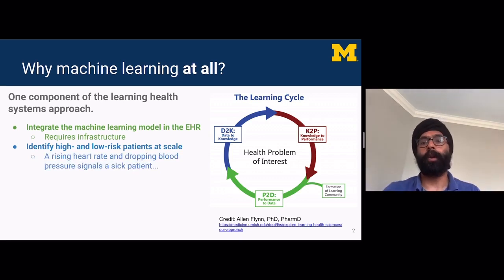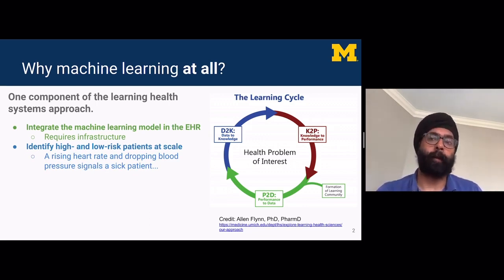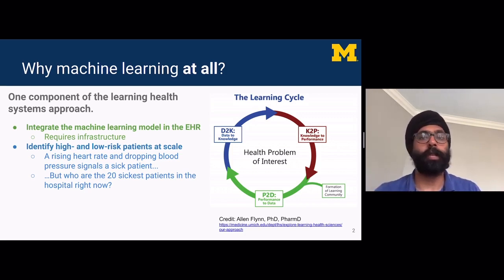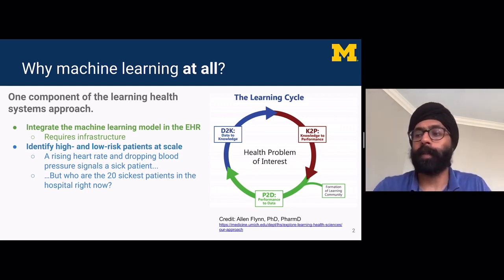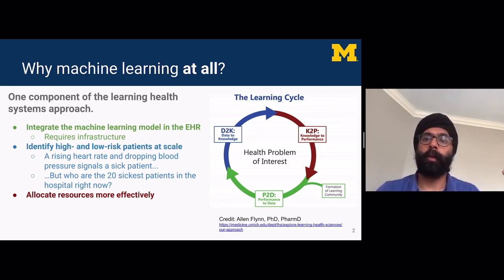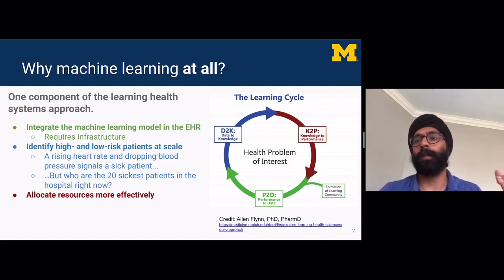If you're a clinician seeing a patient and right in front of you the patient's heart rate is rising and their blood pressure is dropping, you can tell that patient is sick. But if the question is who are the 20 sickest patients in the hospital right now who aren't in the ICU, that's a question that's very difficult to answer at scale. You need to call up all the charge nurses on all the different units and try to figure out who the sickest patients are, and that takes a substantial amount of time. This is where machine learning can play a role.